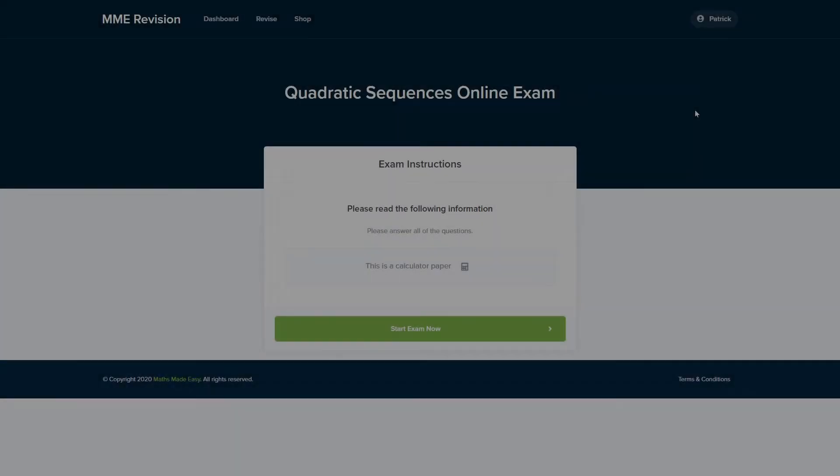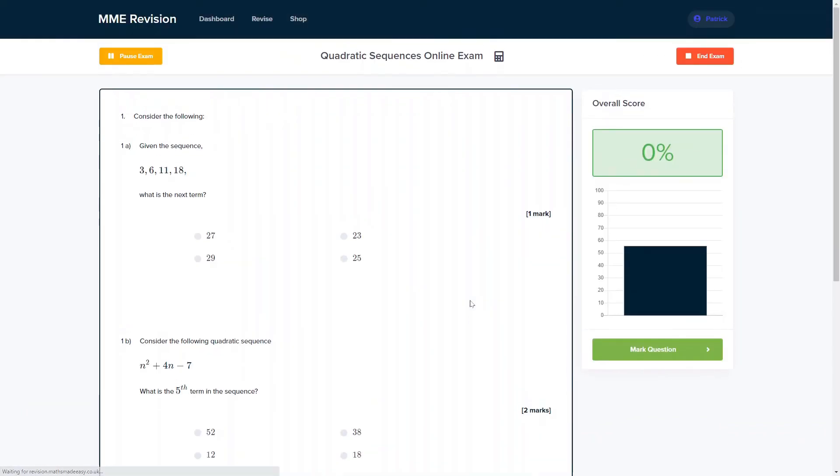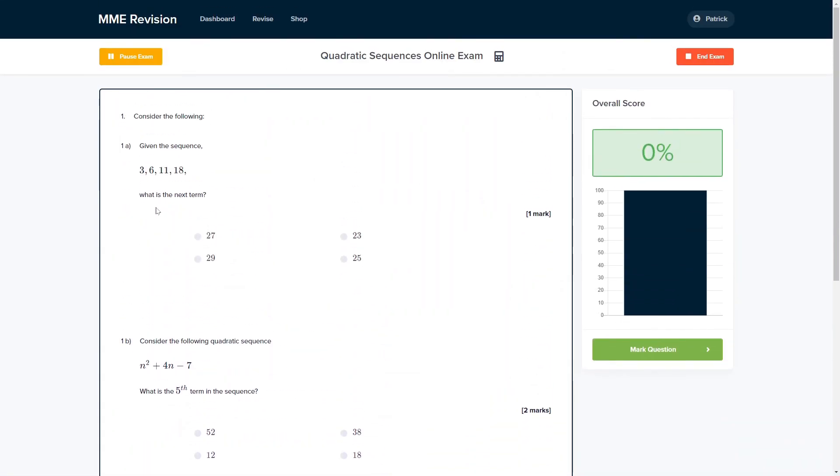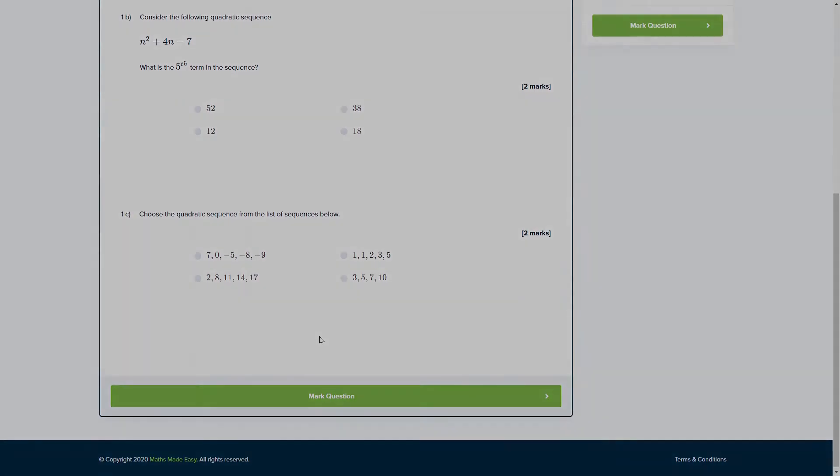Quadratic sequences are a skill that takes some practice, so you can do so with our online exam. This is available through our revision platform. If you take the test, you'll find loads of different questions to have a go at, all of which you'll receive instant feedback on, so you can keep track of where you're going wrong and find out how to improve in time for your actual exam. So if you're interested, you can take the test by clicking the link below.